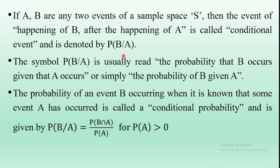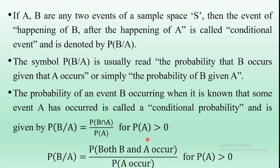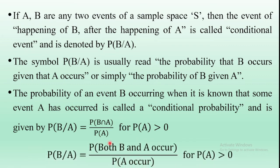The probability of event B occurring when it is known that event A has occurred is called conditional probability. Mathematically, P(B|A) is equal to P(B∩A) divided by P(A), for P(A) greater than zero.